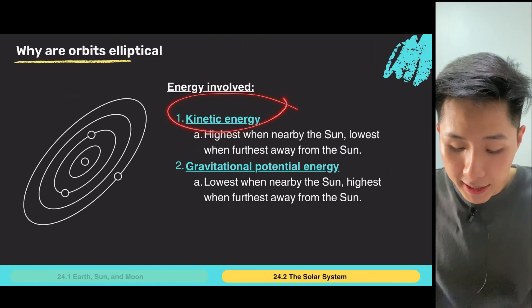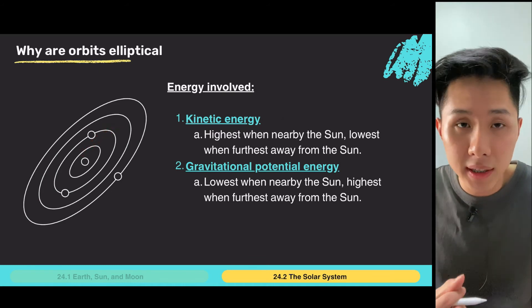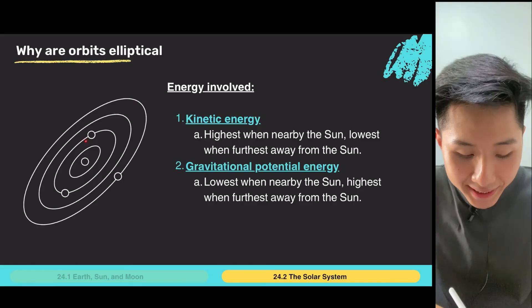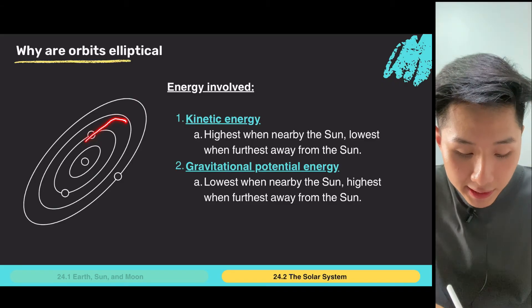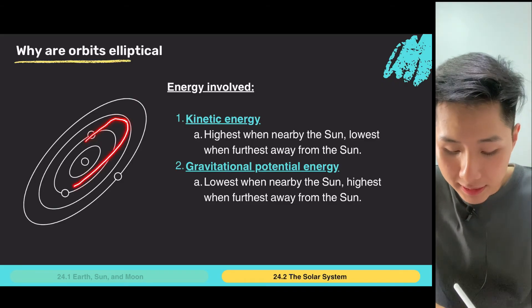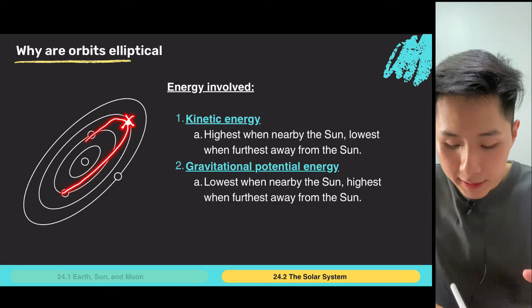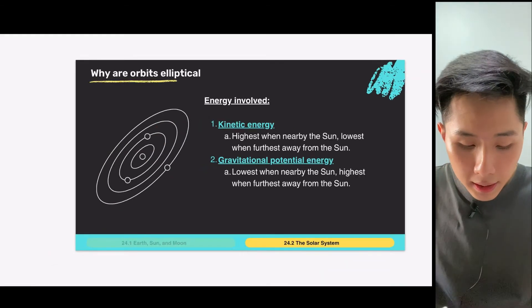So, some of the energies involved is kinetic energy. It is highest when it's nearby the sun because of the sun's gravitational attraction. But then, once it's moved away from the sun, gradually it has less kinetic energy. So, it started slowing down and then go back to the sun again. And that's when the point here is when the planets or the comets have the highest gravitational potential energy.